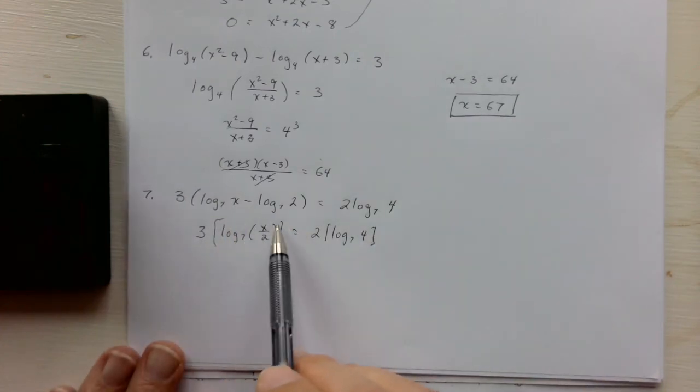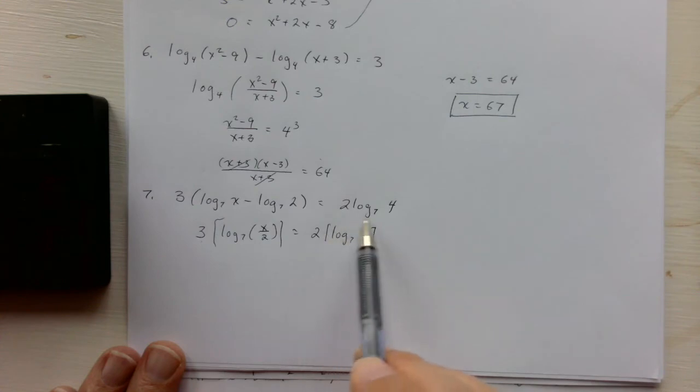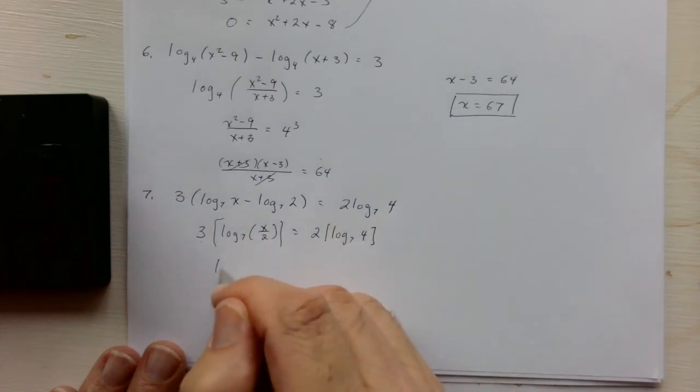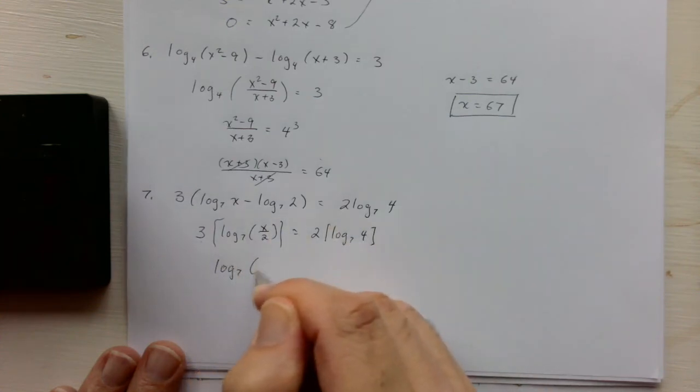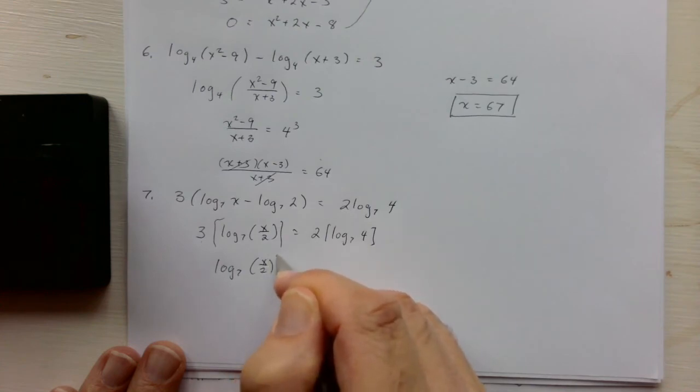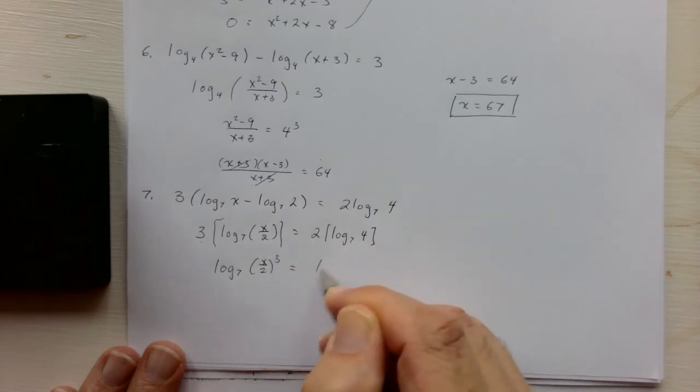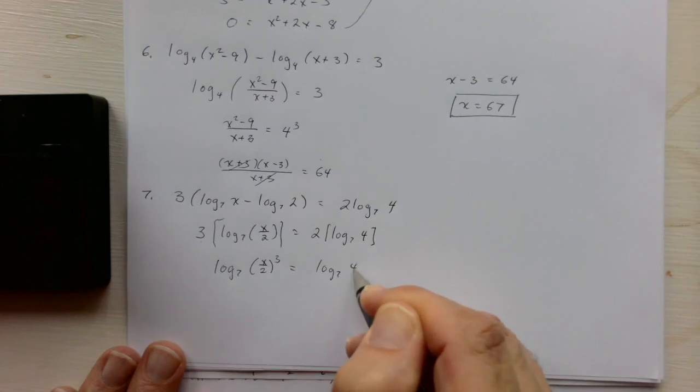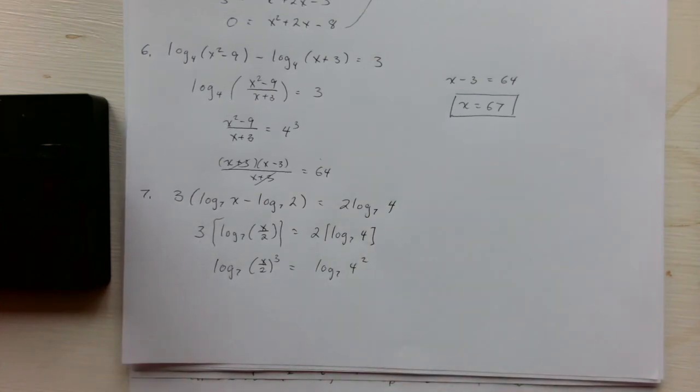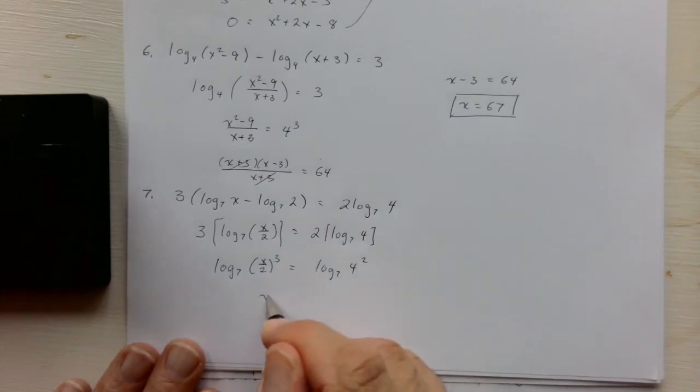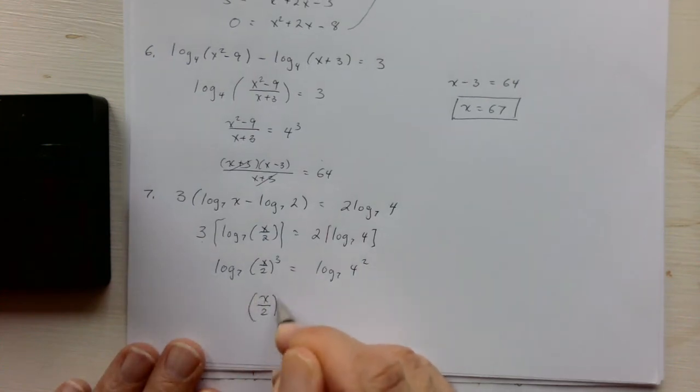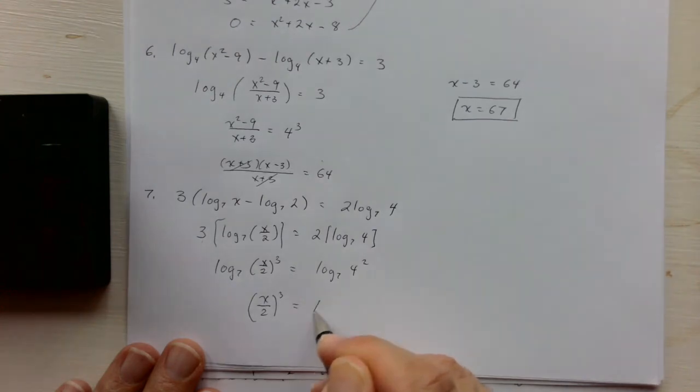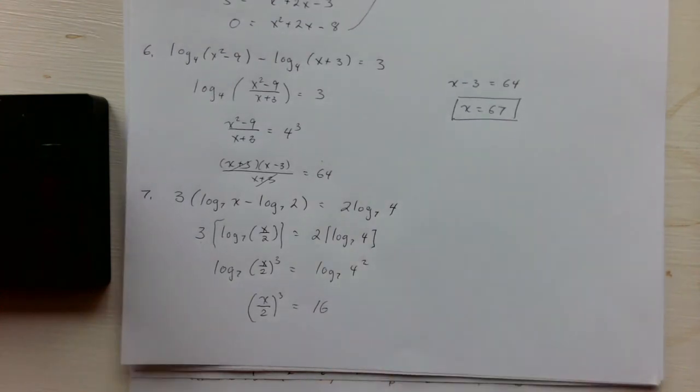We can bring this 3 up here as an exponent, and we can bring this 2 up here as an exponent. Okay, and now we can drop the log 7s. So we get x over 2 cubed is equal to 4 squared, which is 16.